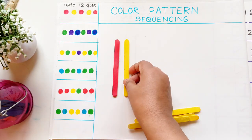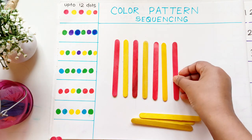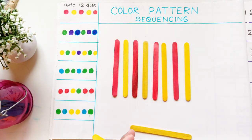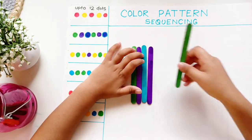Here at every line I have changed the pattern, so according to that the child has to keep the sticks. As they get better, you can increase the length and complexity of the pattern.